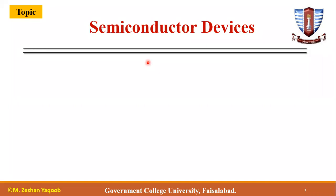We are going to discuss our next lecture, which is about semiconductor devices. In the previous lecture, we discussed how semiconductor material is very important because we can tune it using thermal effects or doping. The scientific community has established key conditions, and we are taking advancements in electronics. Previously, electronics used vacuum tubes, whose size and efficiency were not good, so we now use semiconductor devices in electronics.